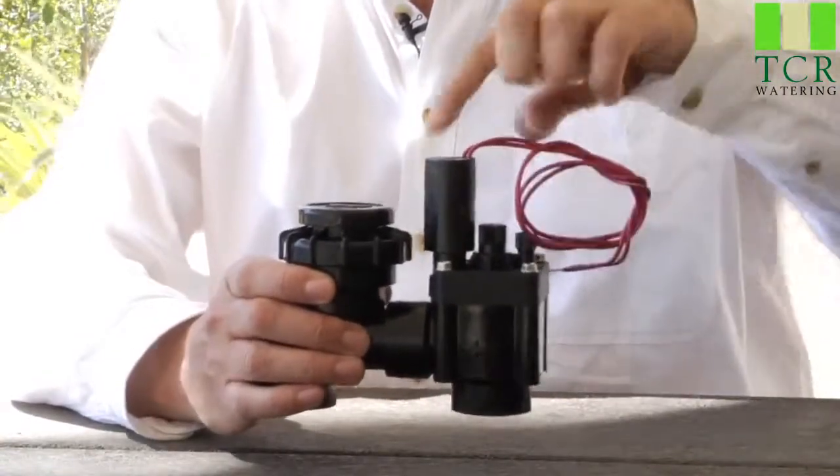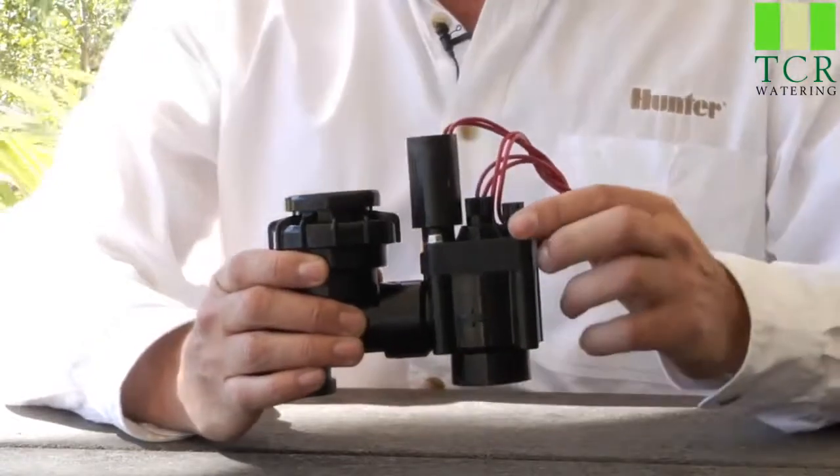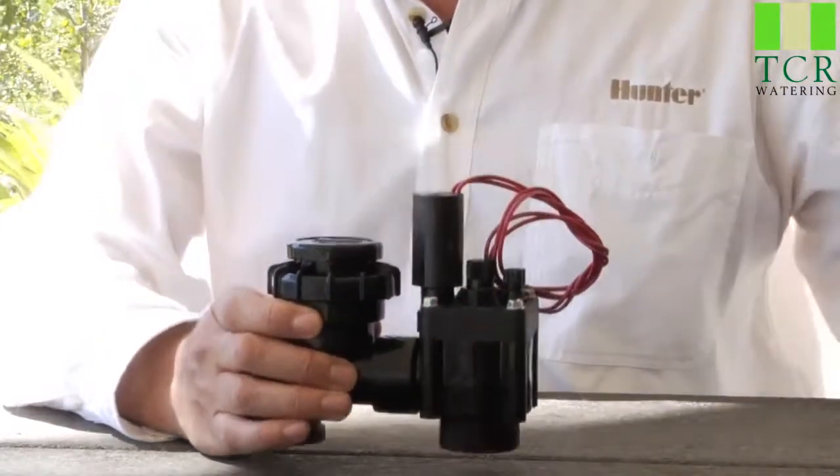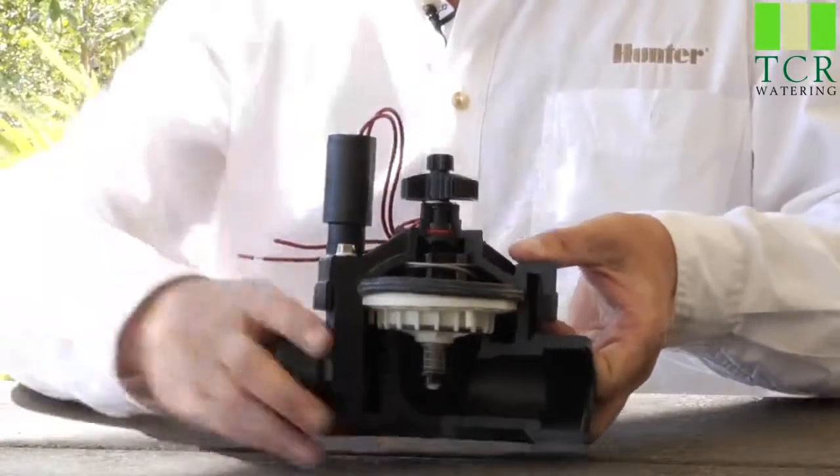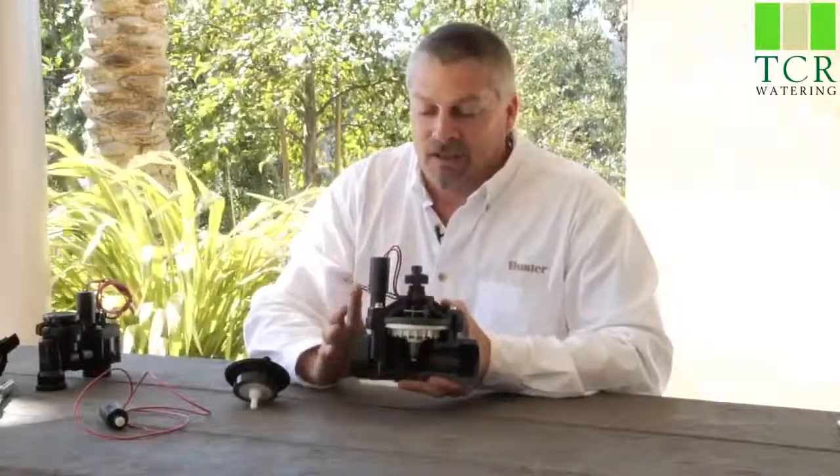the same flow control, and the same solenoid and a manual bleeder screw. This is held down by four screws, and the larger ICV inline is held down by six screws. So that's the basic premise of how valves work.